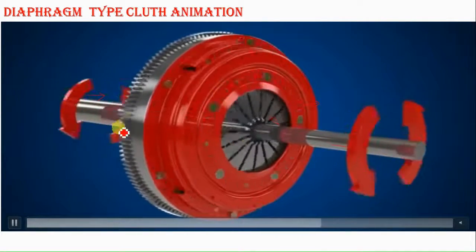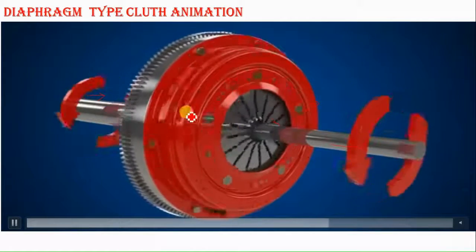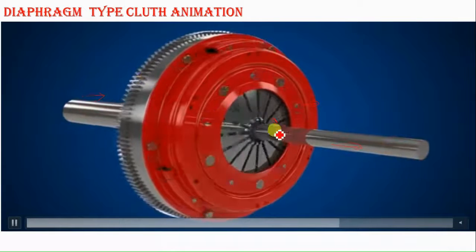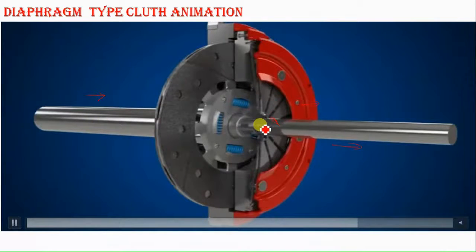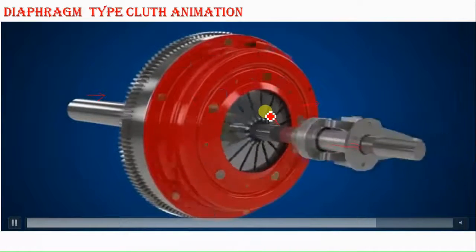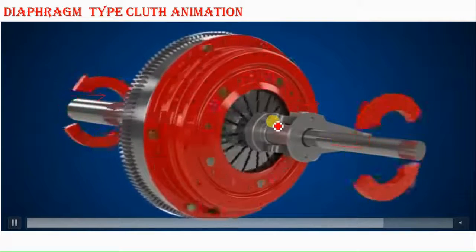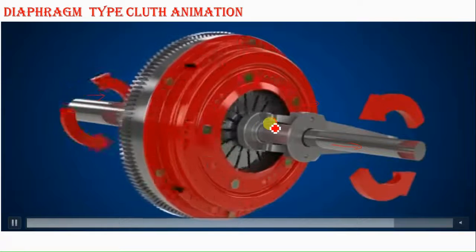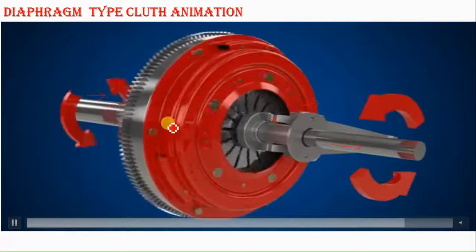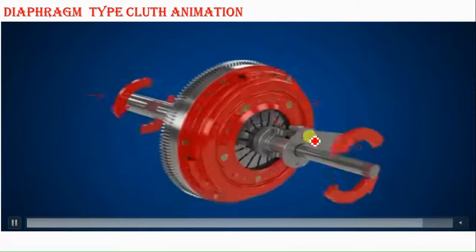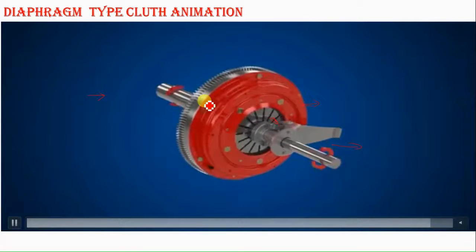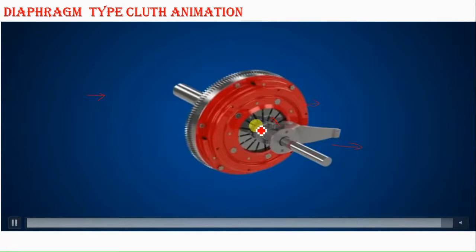This one is the diaphragm housing. When power is transferred, the friction plate is connected with the flywheel. The diaphragm is activated with the help of the throwout bearing, and this throwout bearing is operated with the help of the pedal. When we depress the pedal, the power connection is off. When we release the pedal, the power connection is restored. This is the basic principle of the diaphragm type clutch.